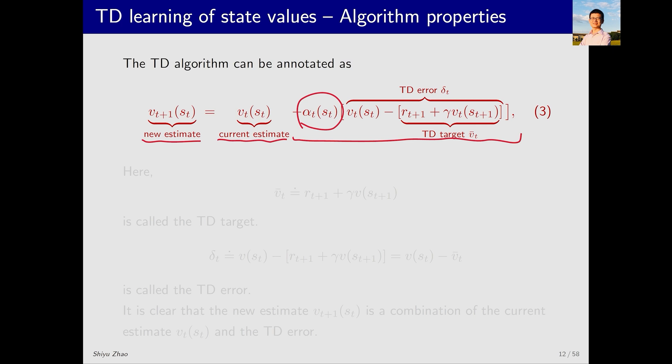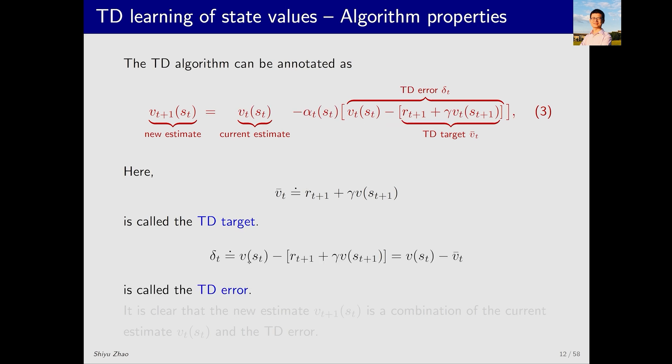First, there is r_{t+1} + gamma*V_t(s_{t+1}). This is called the TD target. Why is it called the TD target? I will explain it shortly. Essentially, it means that V_t is expected to become closer to the target. There is an error between the current value and the TD target. This error is called the TD error. How do we interpret the TD error? I will explain it in detail later.